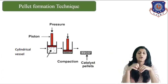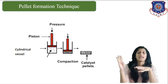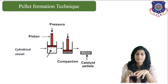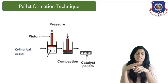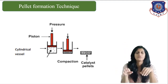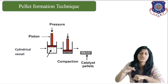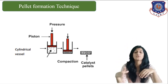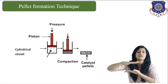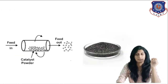In pellet formation technique, as shown in the figure, the formed catalyst in powdered form — either precipitate or gel — is placed inside a cylinder. With the help of a piston, high pressure is applied. Once high pressure is applied, the volume of the catalyst reduces and it is in a compact form. This is how a catalyst pellet looks.